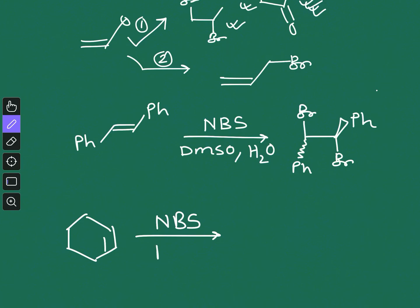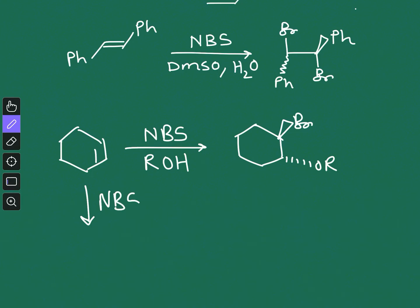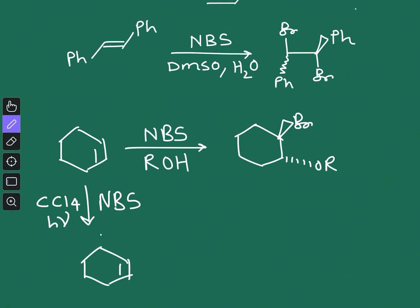A more interesting example is this one: if you add NBS with an alcohol ROH (a general form of alcohol), you are going to get an addition product. But if you add NBS in CCl4 solvent with a radical initiator like AIBN, or do the reaction in the dark or in the presence of light, you will get the substitution reaction at the allylic position. So depending on the reaction condition and solvent, you get two different outcomes from the same starting material.